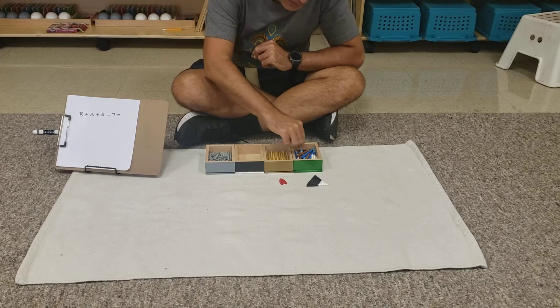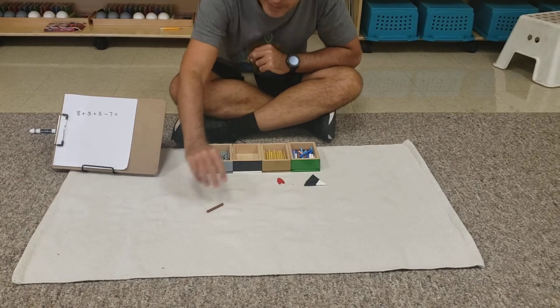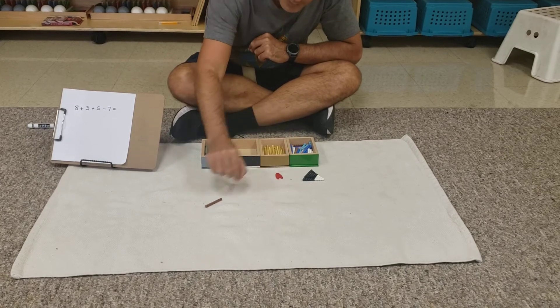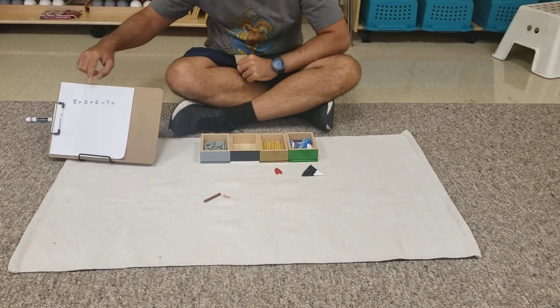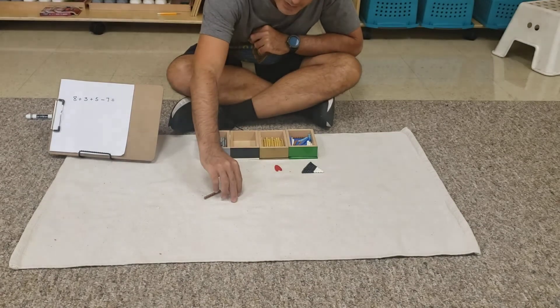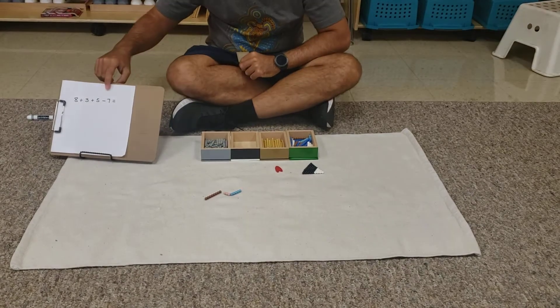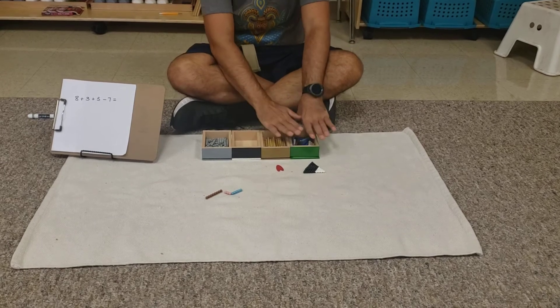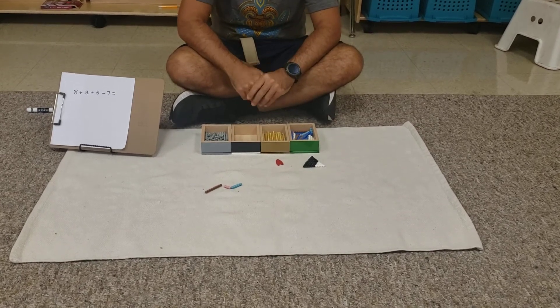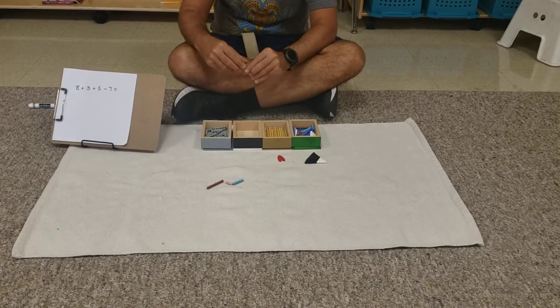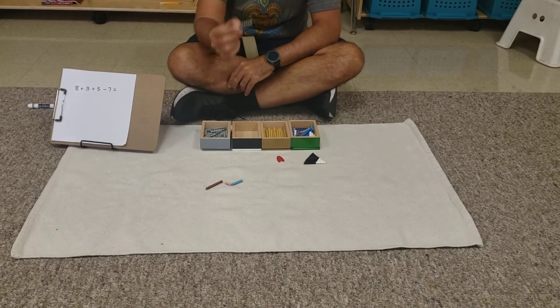So I have 8 plus 3 plus 5 and now the next one is minus 7. So now we need to go to the new box because these three boxes are actually the same ones that we used with the addition snake game. Now for the subtraction snake game I'm going to use this box that has the negative numbers, in this case minus 7.